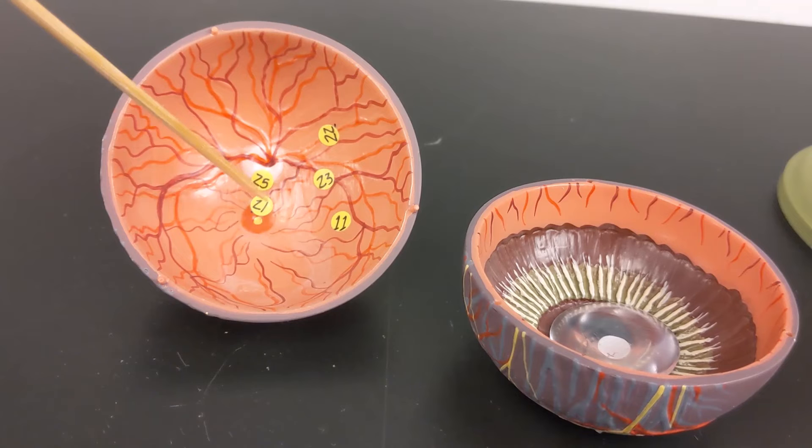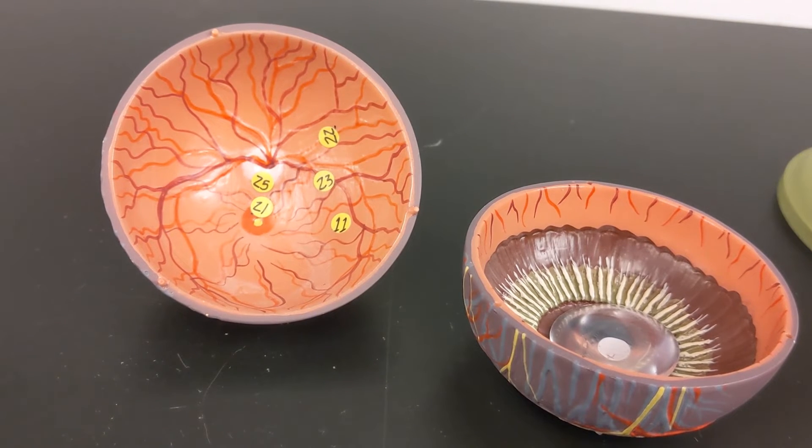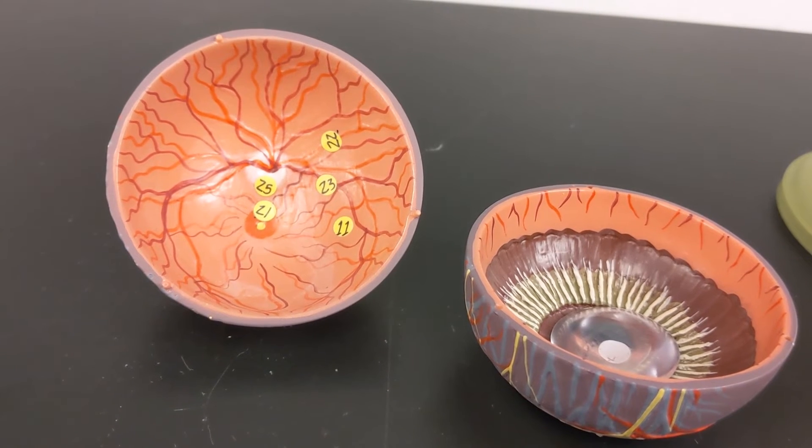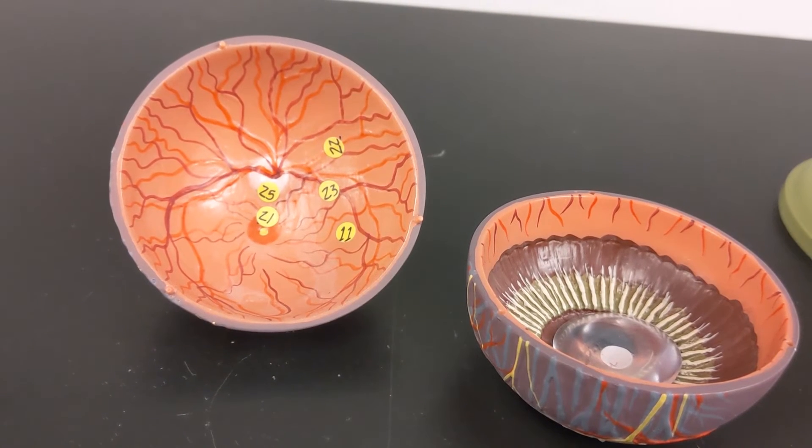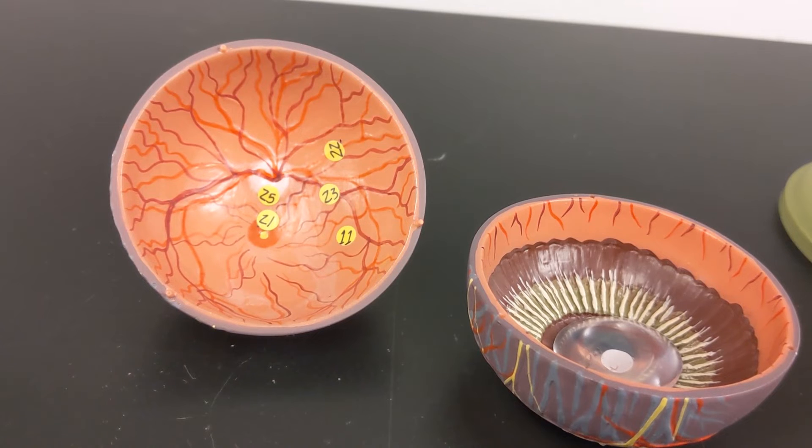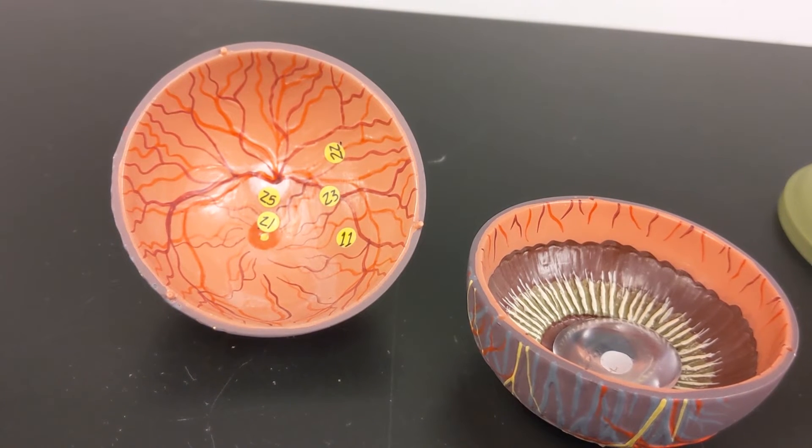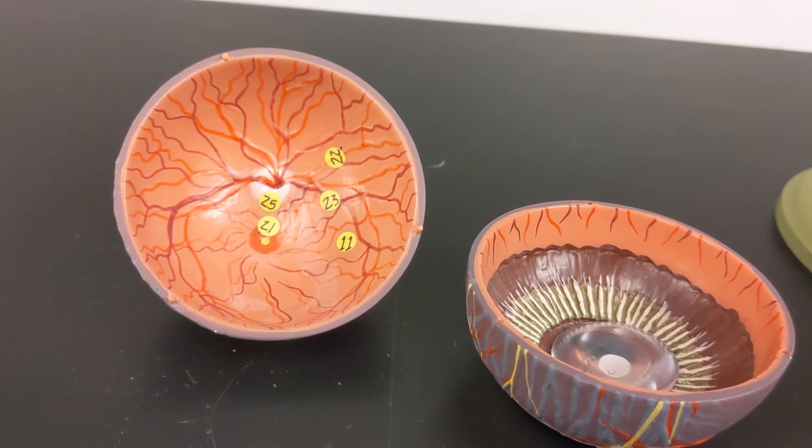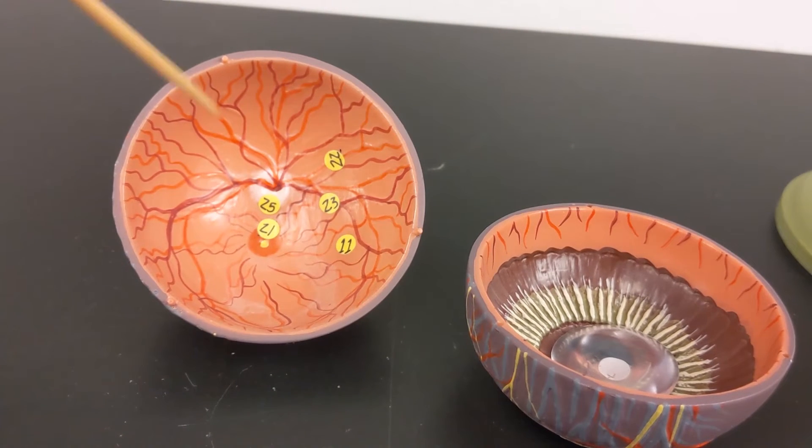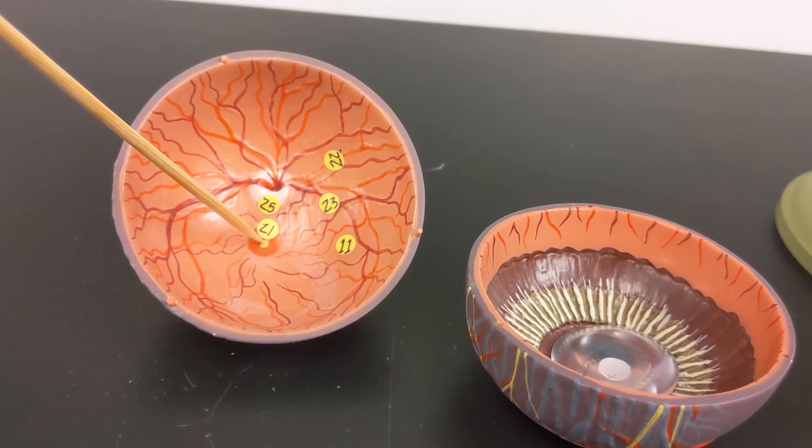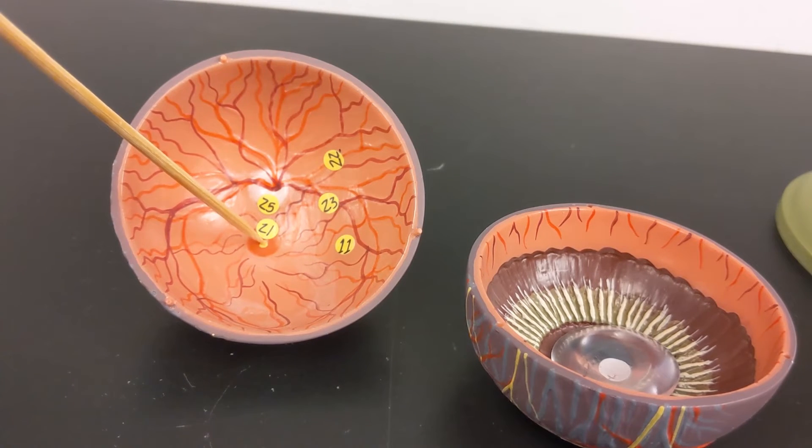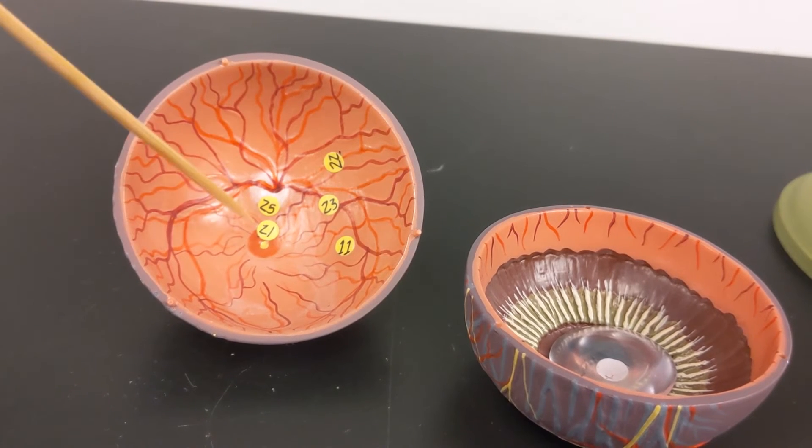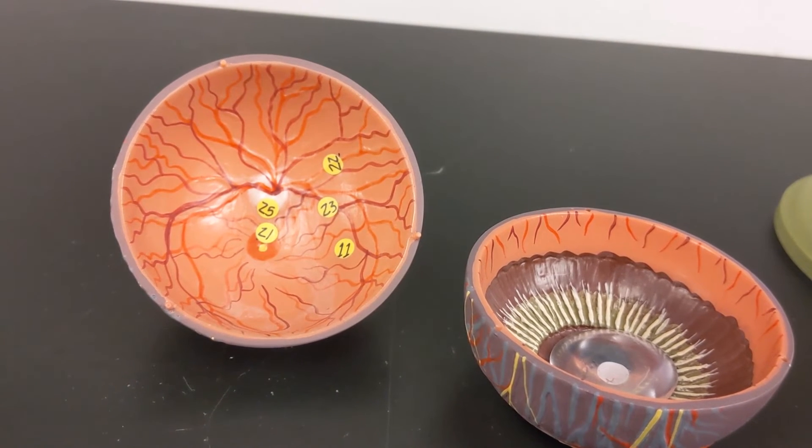And this here is the macula lutea. So the macula lutea is the highest concentration of cones in your retina. And the very center of it is the fovea centralis. So the fovea centralis is your central vision. So what you're looking at dead center in your vision, that image is being projected onto the fovea centralis.